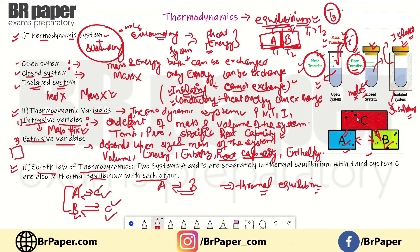Thermodynamic equilibrium comes about through the exchange of heat energy between systems. When A and C exchange heat until they reach temperature T1, and B and C also reach T1, then A and B are automatically at the same temperature T1, meaning they are both in thermal equilibrium with each other. The zeroth law essentially helps us define and deduce the concept of temperature.